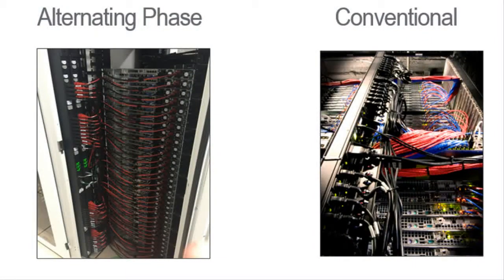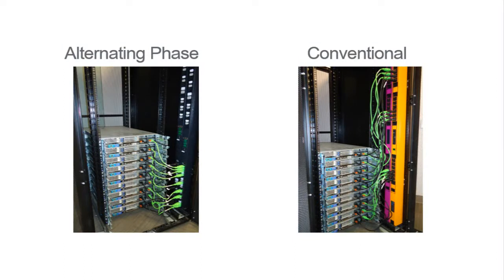Here's a closer look at real-life photos of fully populated racks. The cables on the conventional PDU on the right run up and down the rack, requiring multiple cable lengths, which can disrupt airflow. As equipment is added over time, the cabling becomes more disorganized and chaotic, leading to reduced airflow and higher power usage effectiveness, or PUE. On the left, the alternating-phase PDU supplies the equipment with uniform-length cords running straight across to the equipment, with good airflow. Which rack would you rather have in your data center?